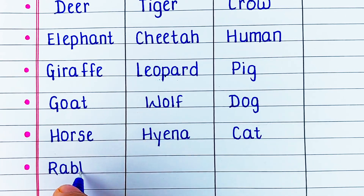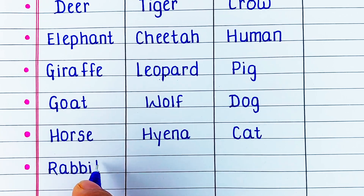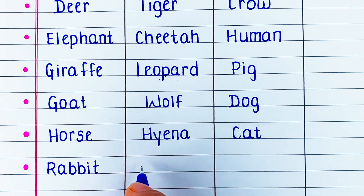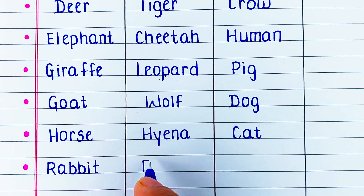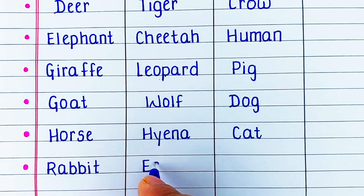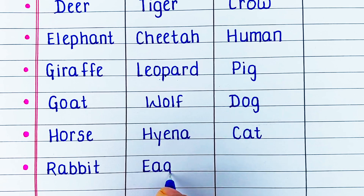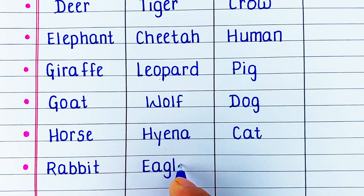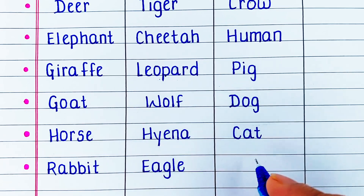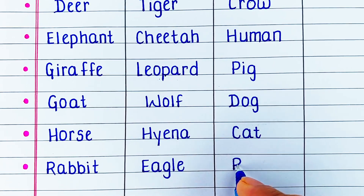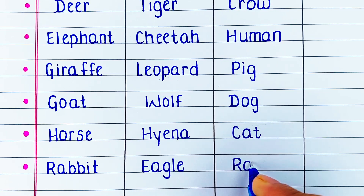Next herbivore in our list is rabbit. Carnivore is eagle. And omnivore is rat.